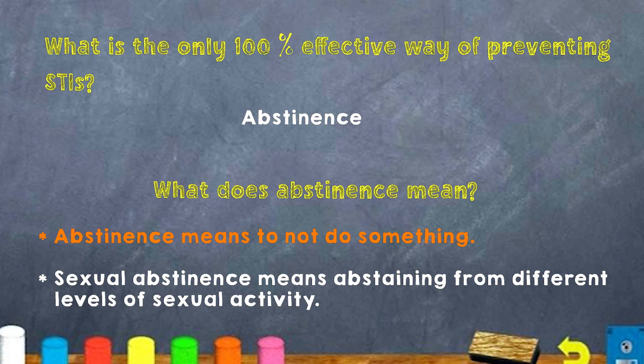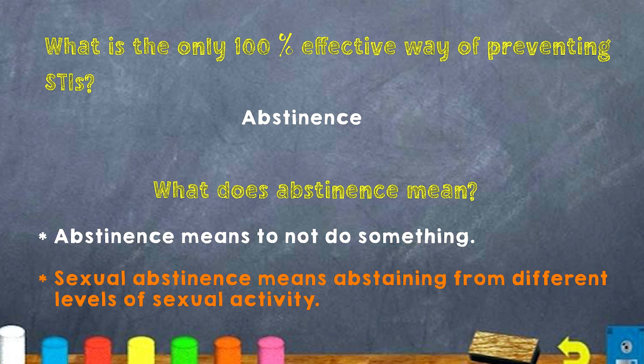How can we prevent having an STI? I will emphasize this, boys and girls — abstinence is the way to go. Abstinence means to not do something. Sexual abstinence means to abstain from different levels of sexual activity.